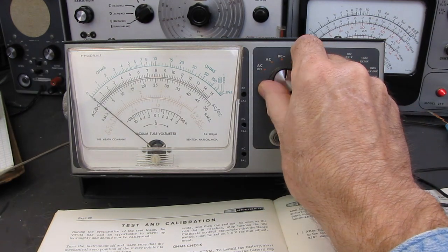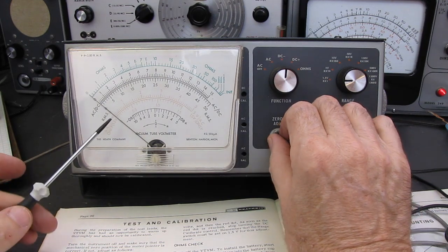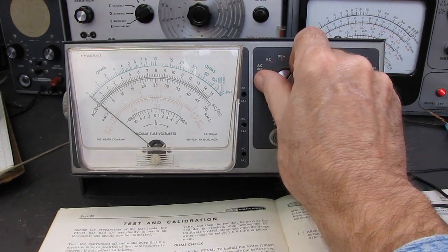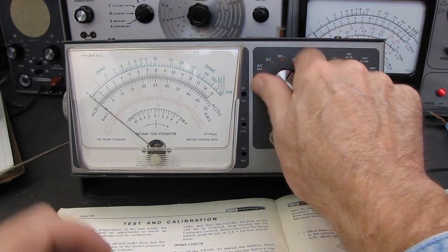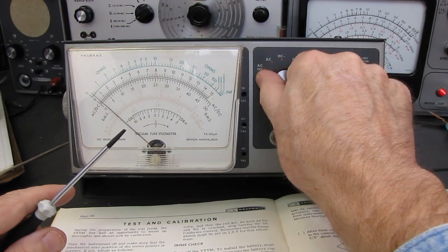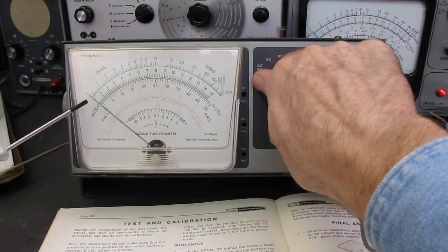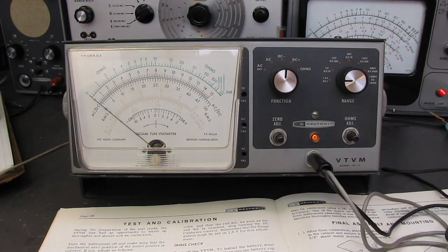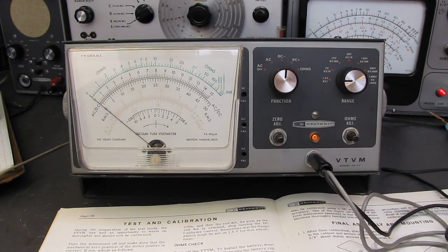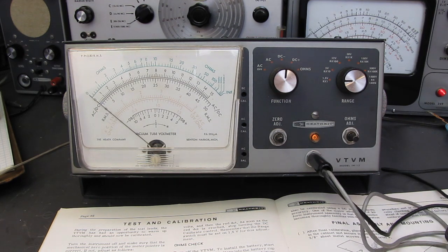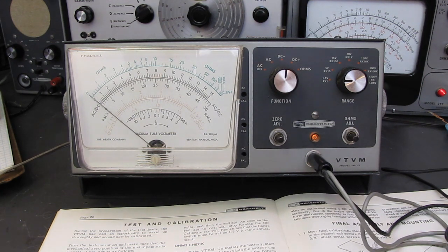Set the switch to DC. Check operation of the zero adjust control. And if we go minus DC, it may have twitched. Yep, now I've knocked it out. Okay. Dead steady. It says it should stay when you switch between plus and minus DC. If everything's good, it'll stay there, and it does.